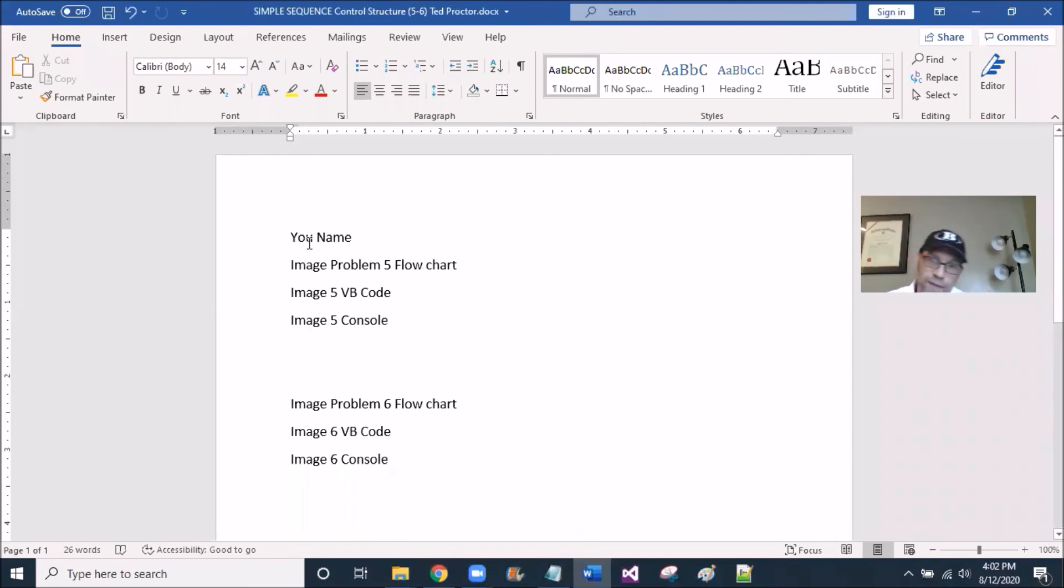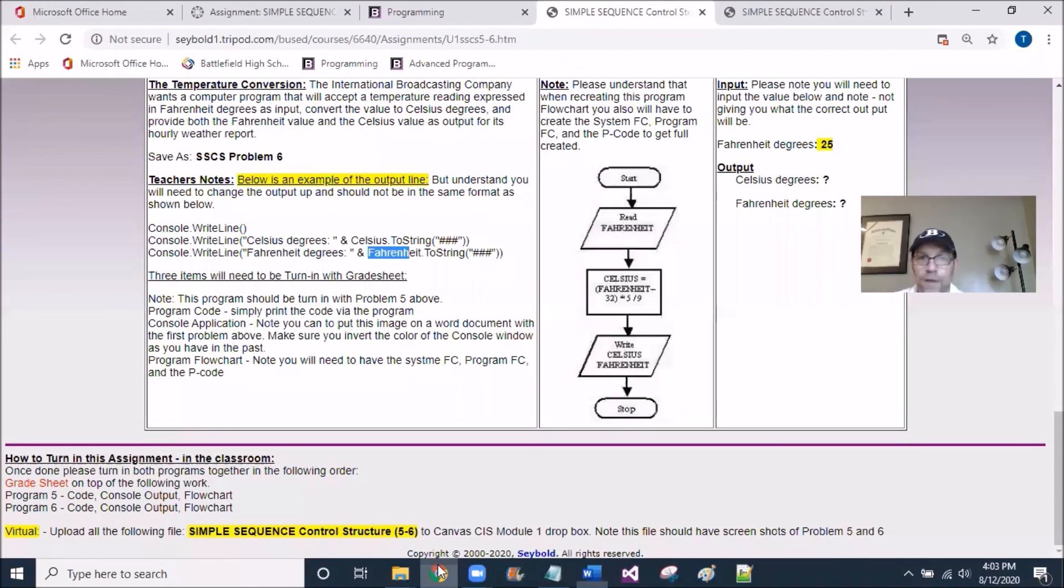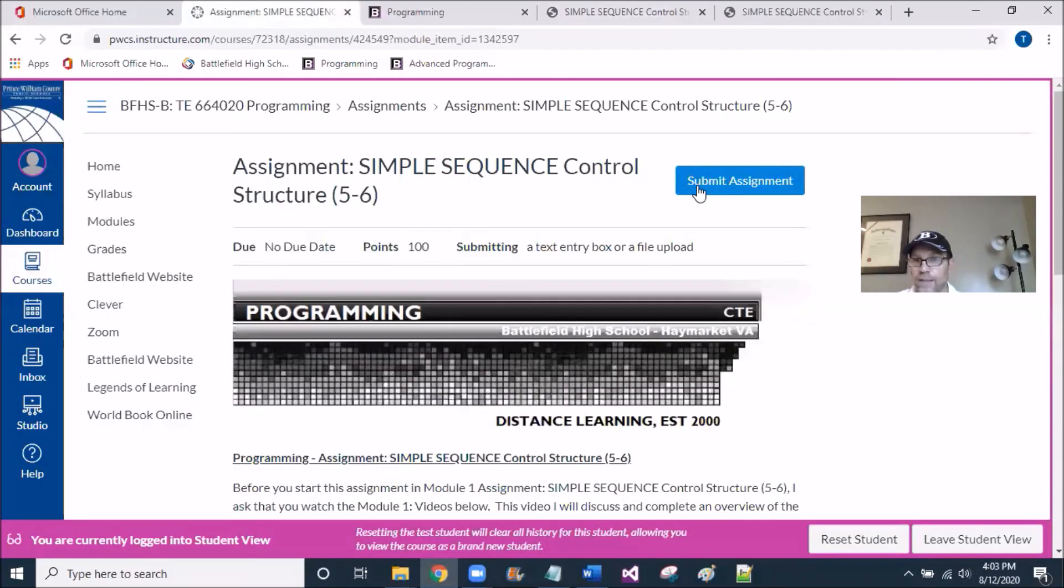I have at the top, I have my name on this Word document. I have the word image, like it was going to be an image of the flow chart, image of the Visual Basic code, image of the program five console window. All right? And then I repeat that. So this could be two pages, could be three pages, because you're doing these images. If you want to make the image a little smaller, you most certainly can.